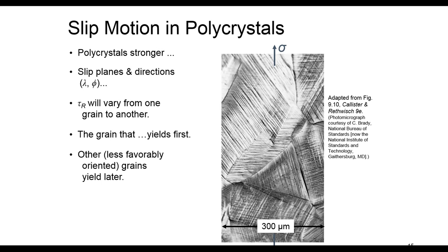The other characteristics of polycrystals is that the slip planes and directions, what we know as angle gamma and phi, they change from one grain to another grain. It's obvious because the direction of the slip planes in each grain is different from the other one. The resolved shear stress also varies from one grain to another grain because these values are changing.